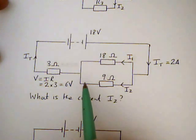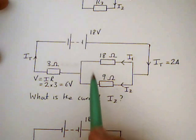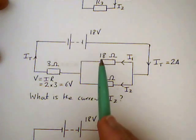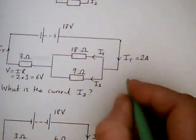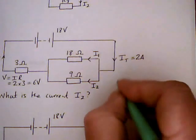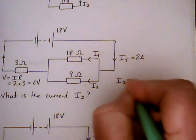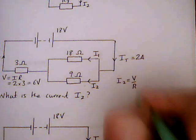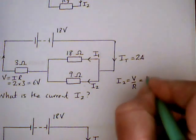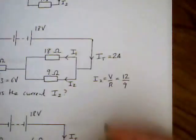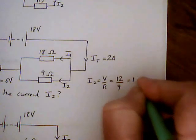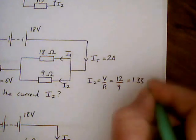So we can use Ohm's law for either resistor using V equals 12 and the resistance shown. So to find I2 we would write I2 equals V upon R equals 12 upon 9 and that equals 1.33 amps.